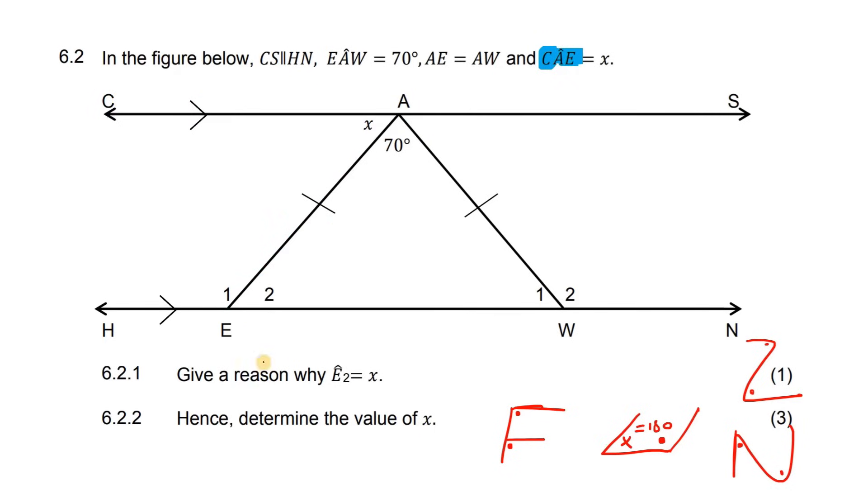The first question says, give a reason why angle E2 is also x. Well, if we do that, what shape have we just made? That's a Z.